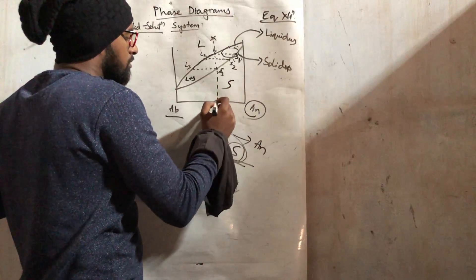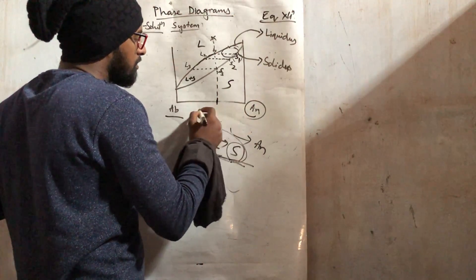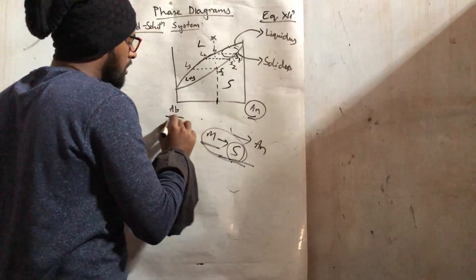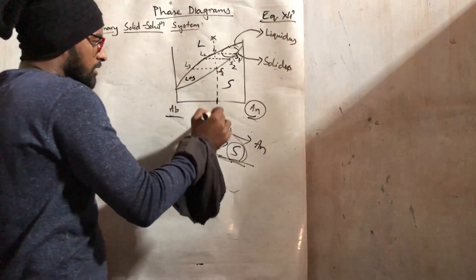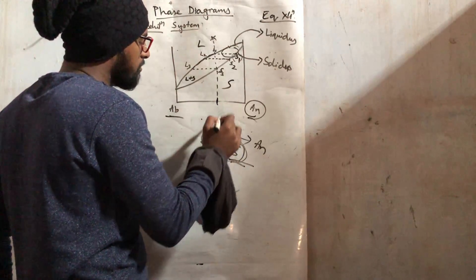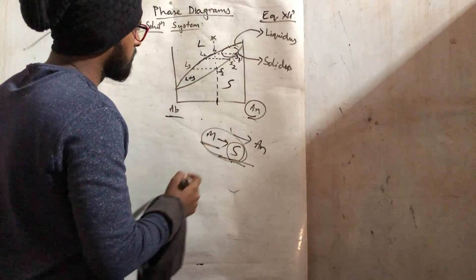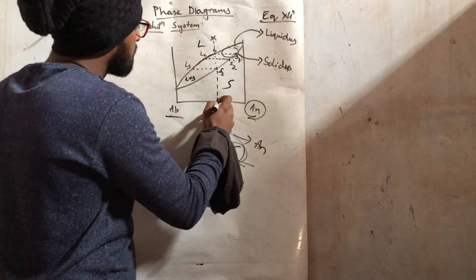For equilibrium crystallization, the final solid composition will be equal to the initial melt. Therefore, the ratio of anorthite to albite in the melt we took will be known to us after the solid has formed completely.